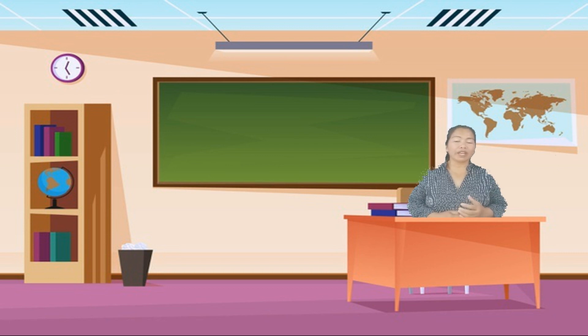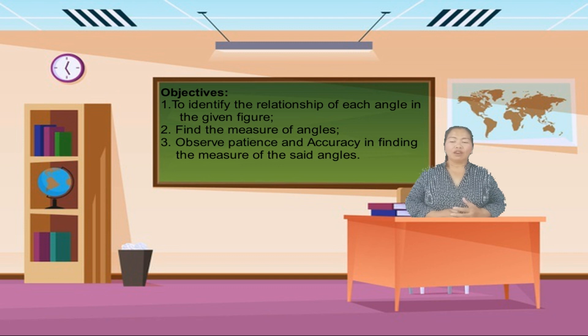But before we start the lesson, here are the objectives of this lesson. First is to identify the relationship of each angle in the given figure. The second one is find the measures of the given angle. And the last one, of course, observe patience and accuracy in finding the measure of the different angles in the given figure. Keep watching and enjoy learning.